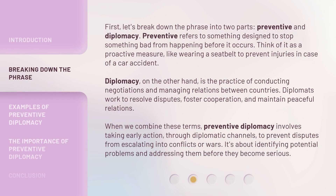First, let's break down the phrase into two parts: preventive and diplomacy. Preventive refers to something designed to stop something bad from happening before it occurs. Think of it as a proactive measure, like wearing a seatbelt to prevent injuries in case of a car accident.